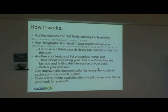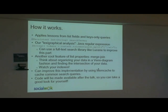This uses a cool feature of list properties and queries called merge join. You can think of this as organizing your data in a Venn diagram fashion and then finding the intersection of that data. When you have multiple terms, you find the set of all entities containing one term and the set containing another, then intersect the two to get your search results.